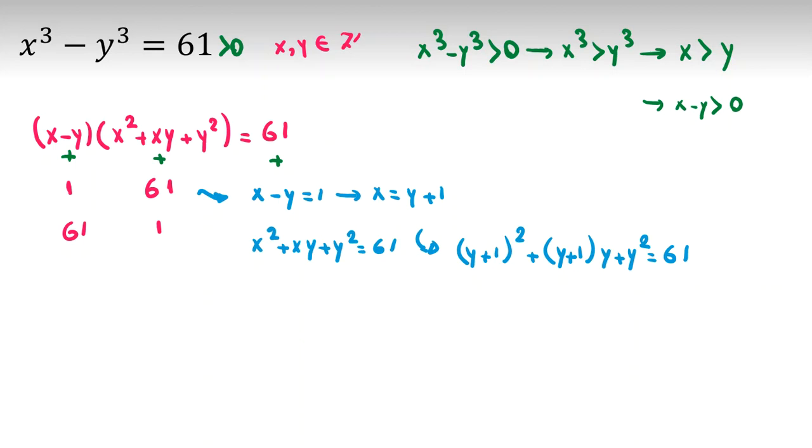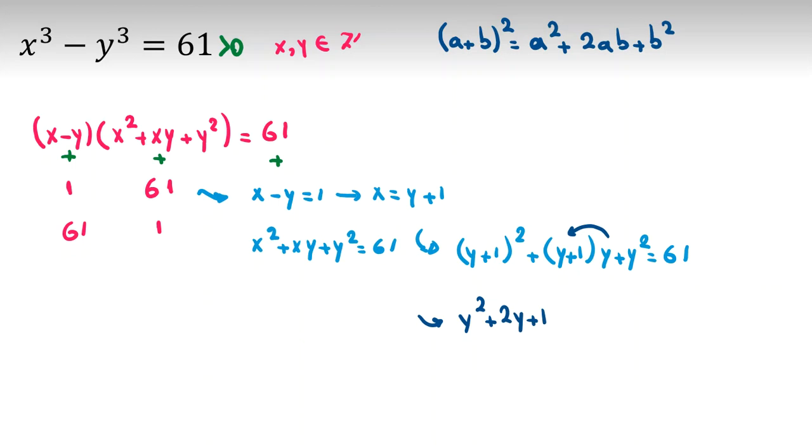Now, for calculating y plus 1 squared, I should write the identity to use: a plus b squared equals a squared plus 2ab plus b squared. If you apply it here, it will be y squared plus 2y plus 1, y times y is y squared, y times 1 is y, plus y squared equals 61.